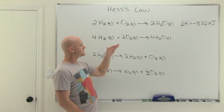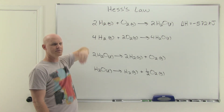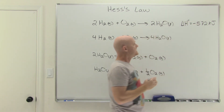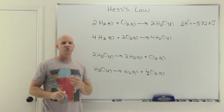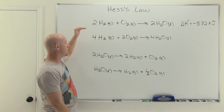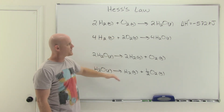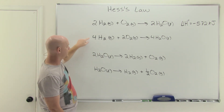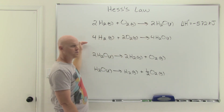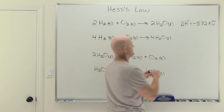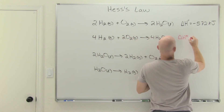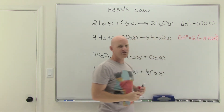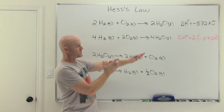Looking at some related reactions: the top reaction from the last lesson has delta H standard equal to negative 572 kilojoules. The second reaction is just double the first — doubling all the coefficients. If you double the amount of reaction, it doubles the delta H value, so delta H would equal two times negative 572 kilojoules.